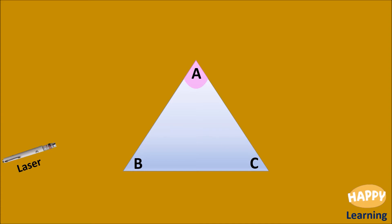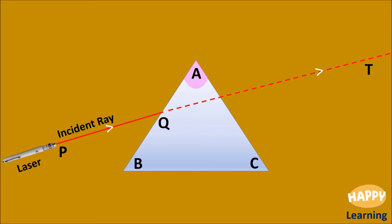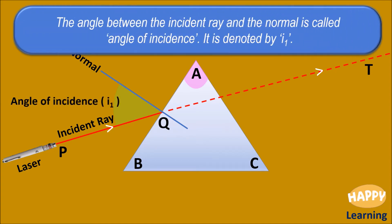This is a laser pen. A ray is made to incident on the first refracting surface AB. PQ is the incident ray. This would be the path of the incident ray in the axis of the prism. Draw a normal at Q. The angle between the incident ray and the normal is called angle of incidence. It is denoted by I1.